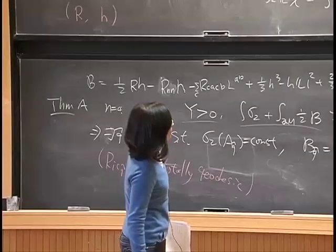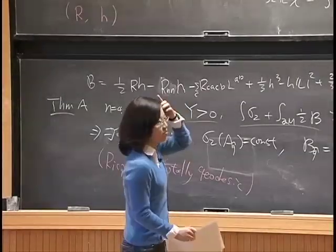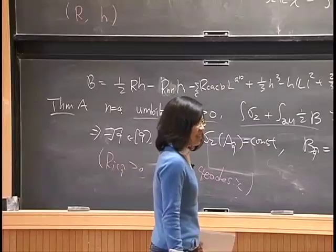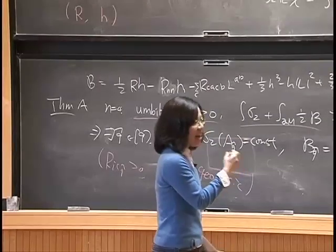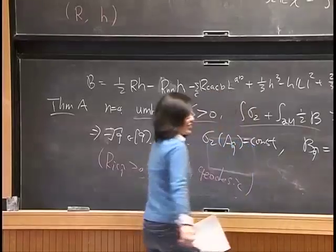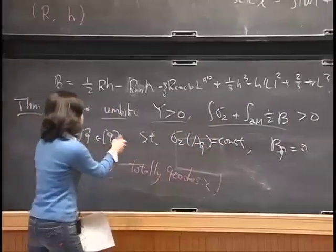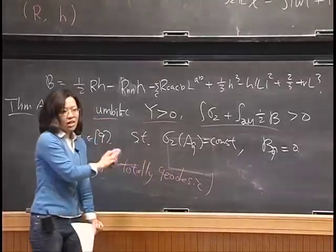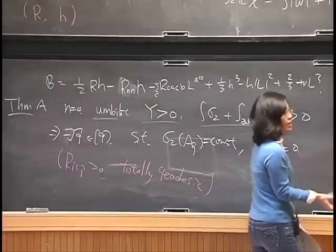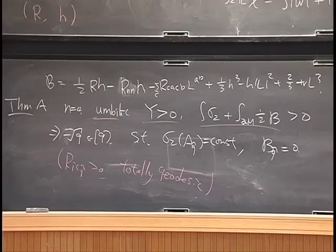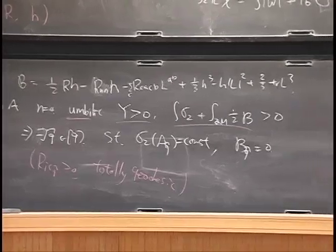The answer to what the correct boundary condition is — you want to choose the boundary condition so that the problem is variational, which is why B2 equal to zero arises as a Neumann boundary condition for the fully nonlinear equation. Let me also briefly discuss an application. Consider a conformally compact Einstein manifold with conformal infinity. If the Yamabe constant of the conformal infinity is positive and the renormalized volume is also positive, then there exists a conformal compactification such that sigma-2 curvature is a positive constant and the boundary is totally geodesic.